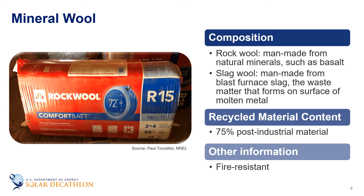The next material on our list is mineral wool. The term mineral wool typically refers to two types of insulation materials: rock wool, which is a man-made material consisting of natural minerals like basalt or diabase, and slag wool, a man-made material made from blast furnace slag — that's the waste matter that forms on the surface of molten metal. Mineral wool contains an average of 75 percent post-industrial recycled content, doesn't require additional chemicals to make it fire resistant, and is commonly available as blanket and loose fill insulation.